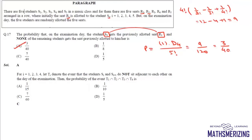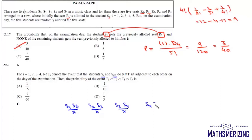For i equals 1, 2, 3 and 4, let Ti denote the event that student Si and Si+1 do not sit adjacent to each other. So T1 is S1 and S2 not adjacent, T2 is S2 and S3 not adjacent, T3 is S3 and S4 not adjacent, and T4 is S4 and S5 not adjacent. We need to find the probability of all four conditions holding simultaneously.